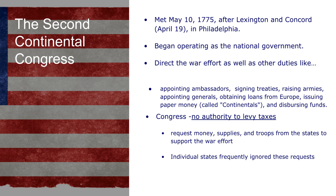You can see that long list of different things they can do on your notes, but what's not on the list is probably the most important: Congress has no authority to levy taxes. They can request money and supplies, but they don't actually have the authority to enforce any kind of tax. This is going to be a big problem during the Revolution, because to fight a war you need money. Without the power to tax, they will have great difficulty throughout the war providing for the army and waging this war.